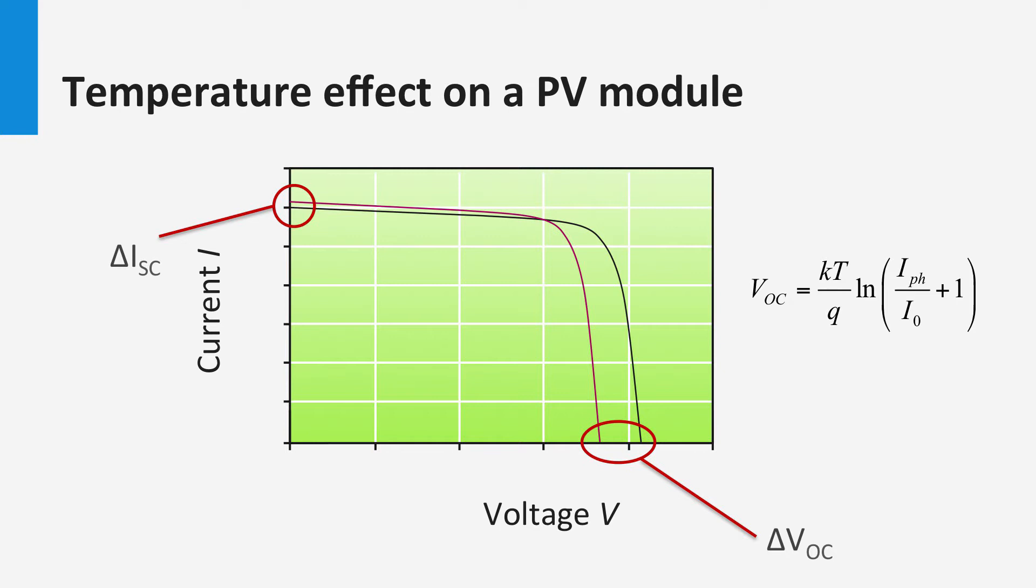The drop in open circuit voltage with temperature is mainly related to the increase in the leakage currents of the photodiode I0 in the dark with temperature. The I0 strongly depends on the temperature. We have dedicated one of the exercises this week to this effect.